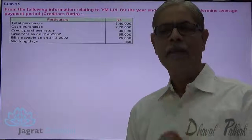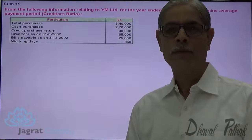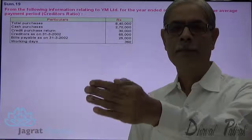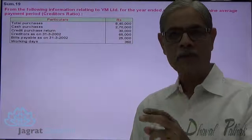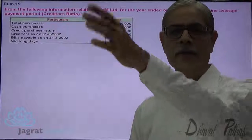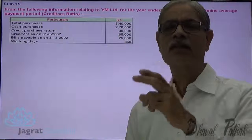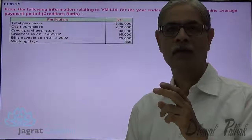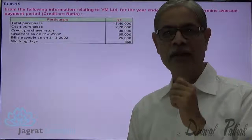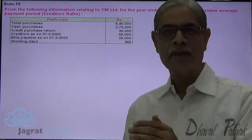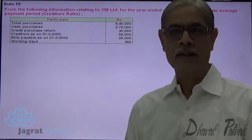The other name of average payment period is known as creditors ratio. We purchase goods on credit, and after some time we make payment to the supplier. The question is: what was the average time period during the year within which we made payment to the creditors?